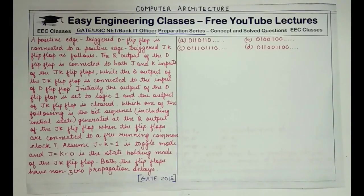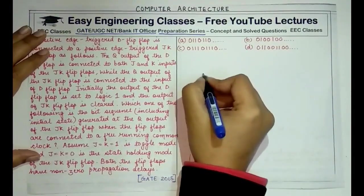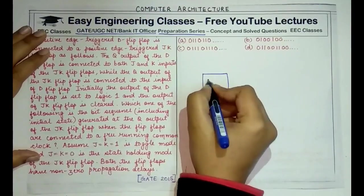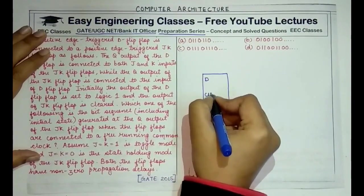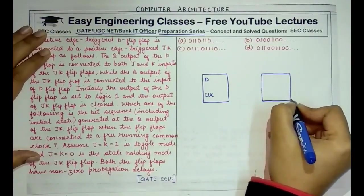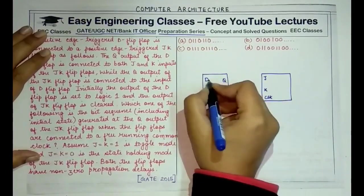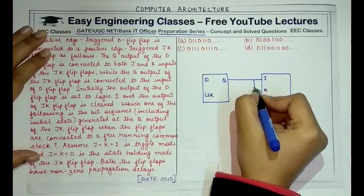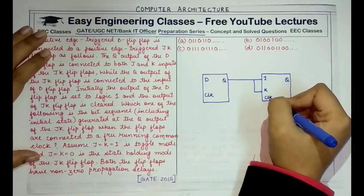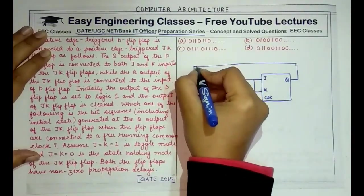These options are given when the two flip-flops are connected as described. This question appeared in GATE 2015. First, we'll draw the arrangement indicated in the question. We have a D flip-flop — a delay flip-flop — and a JK flip-flop with a common clock. The Q output of the D flip-flop is connected to both J and K inputs, and the Q output of the JK flip-flop is connected to the D input.